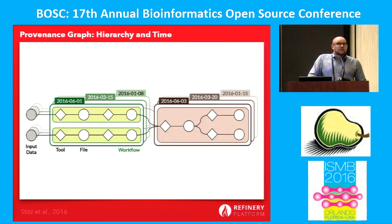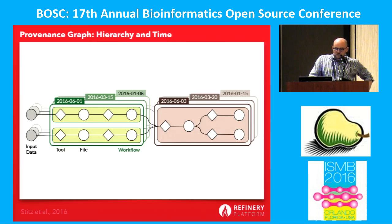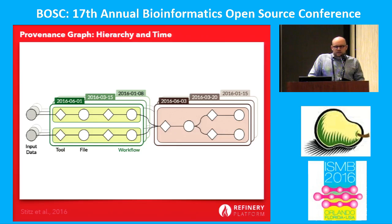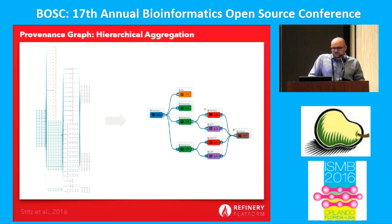But we can exploit a couple of properties of these provenance graphs. First, they're hierarchical — the hierarchy here is workflows, files, and tools. We also have time as an aspect, so these analyses are executed at certain time points, and we can exploit that information. What we do is essentially aggregate these graphs. That's pretty straightforward — the hierarchy is already given.